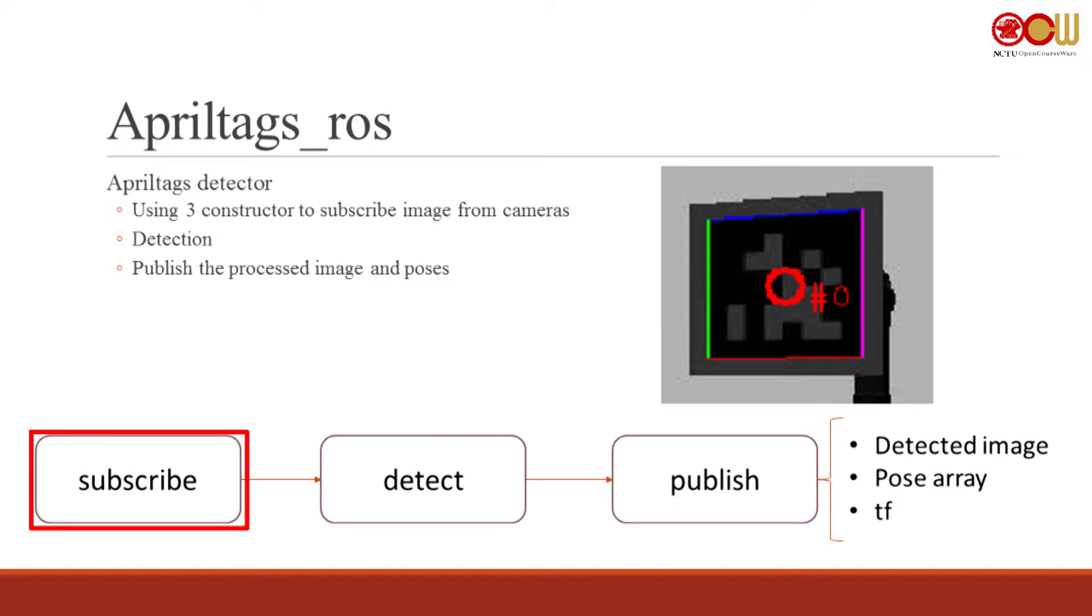First it's going to subscribe the camera's image, then do a detection algorithm and then publish. They're going to publish three types of information: the detector image, pose array, and TF. And the intersection part will use this TF transformation to do something special.